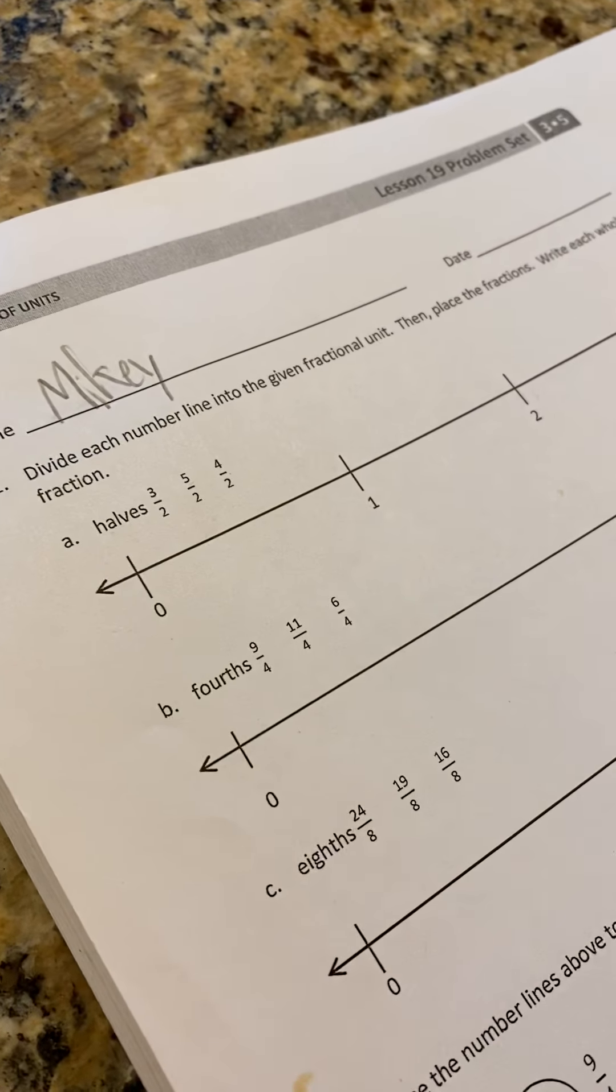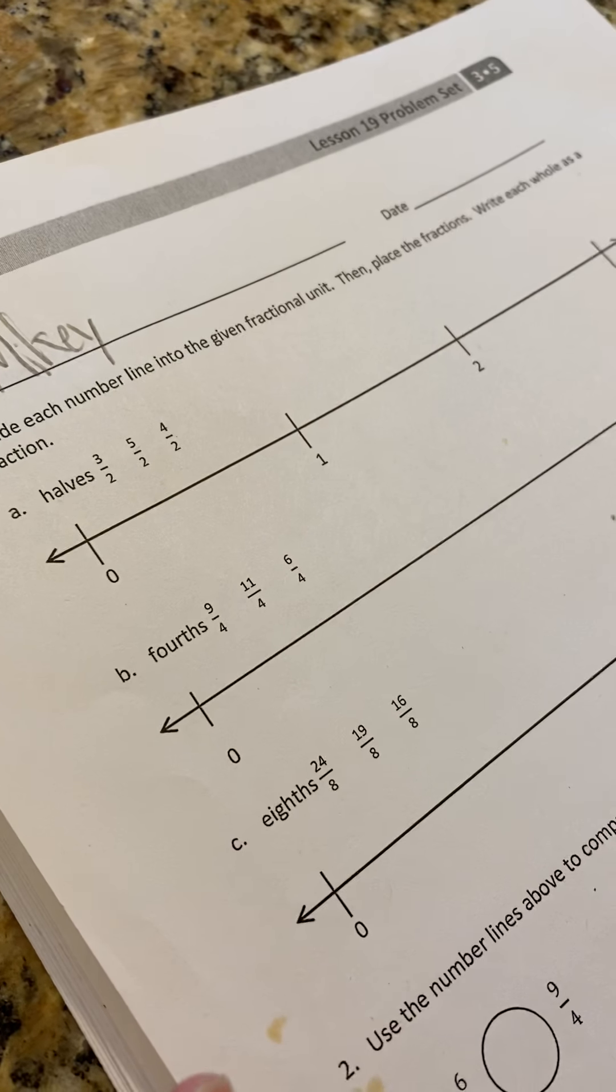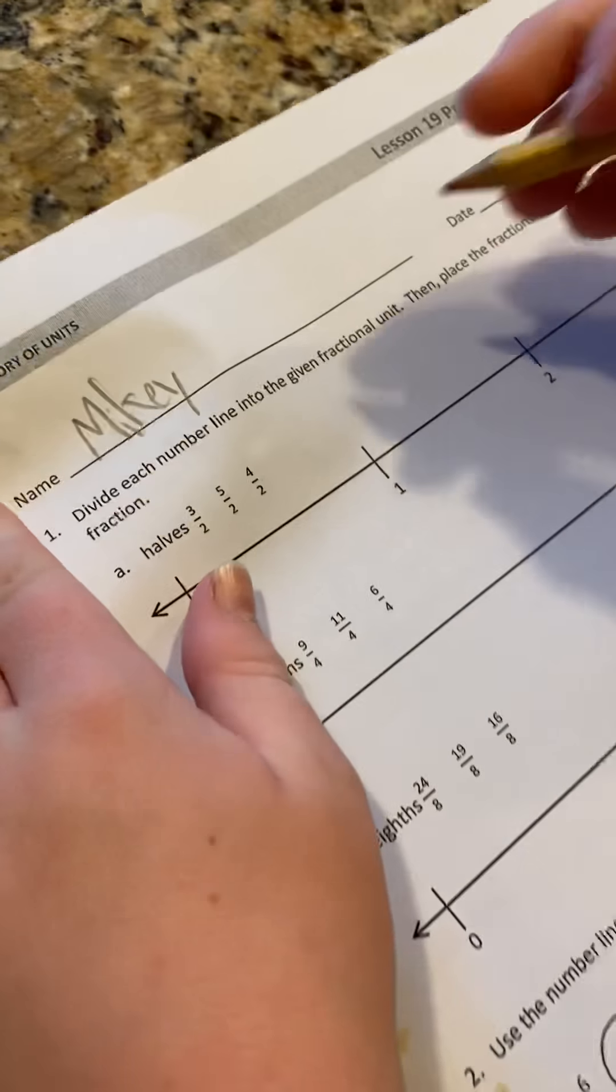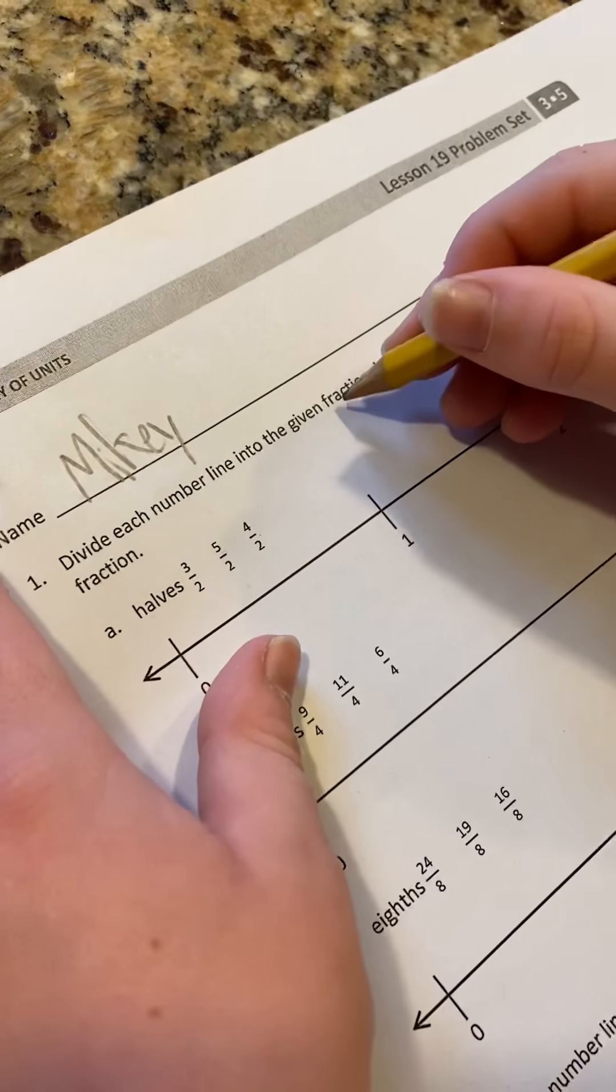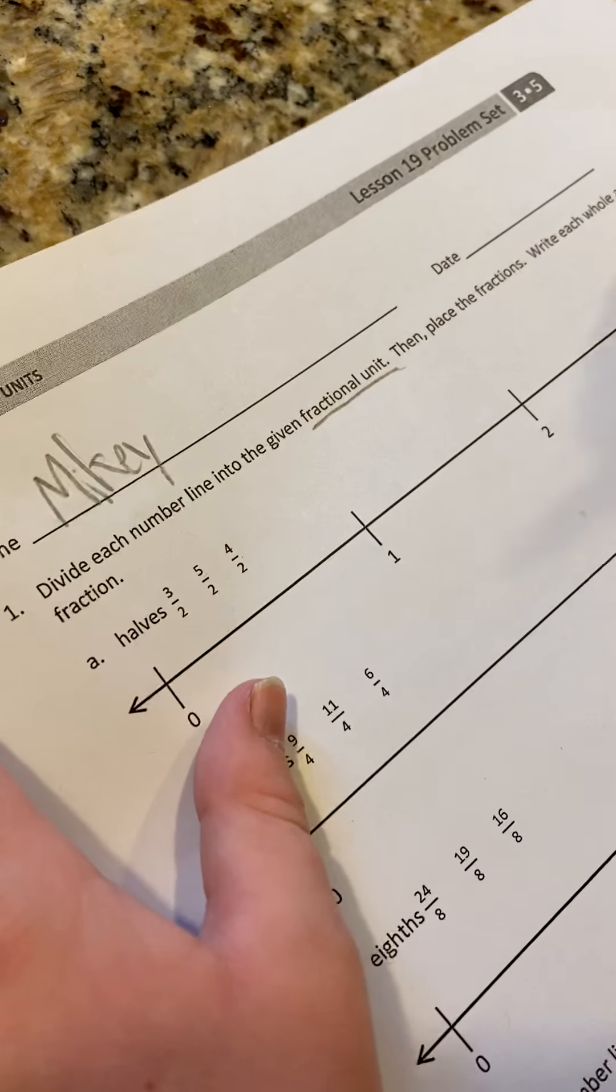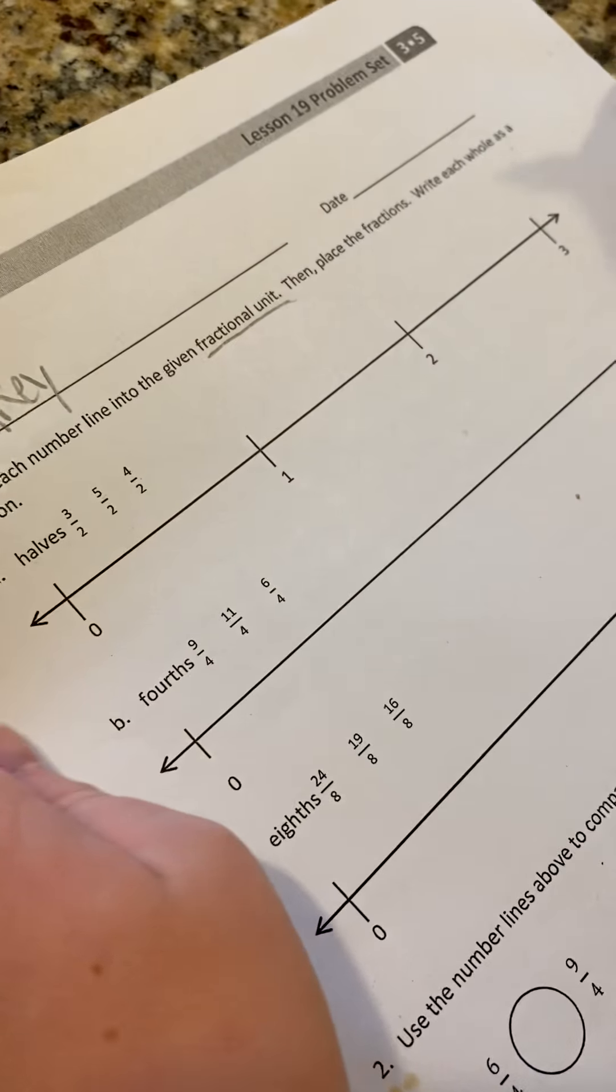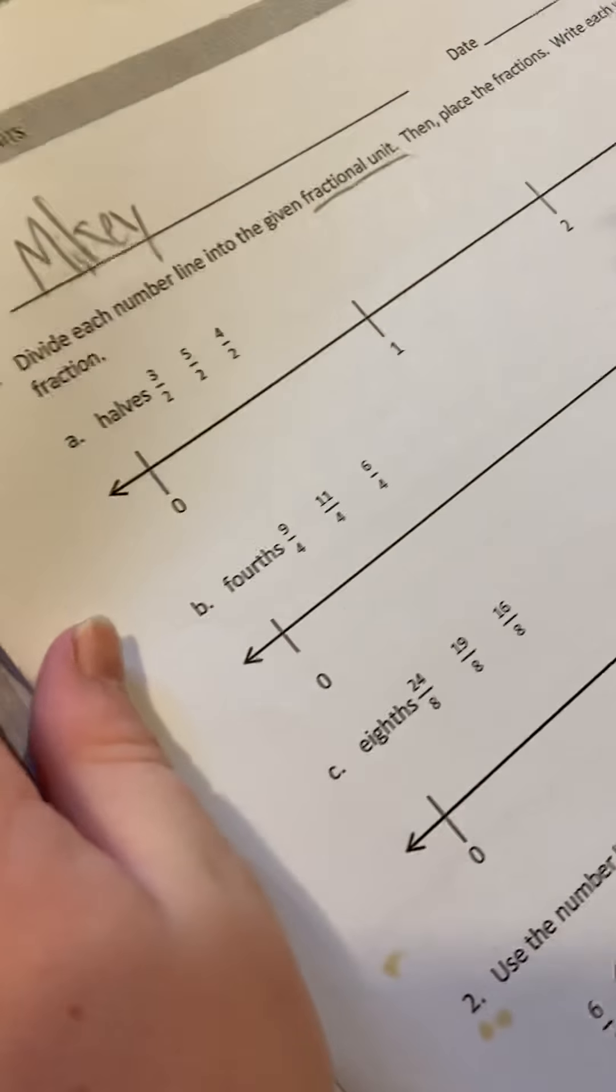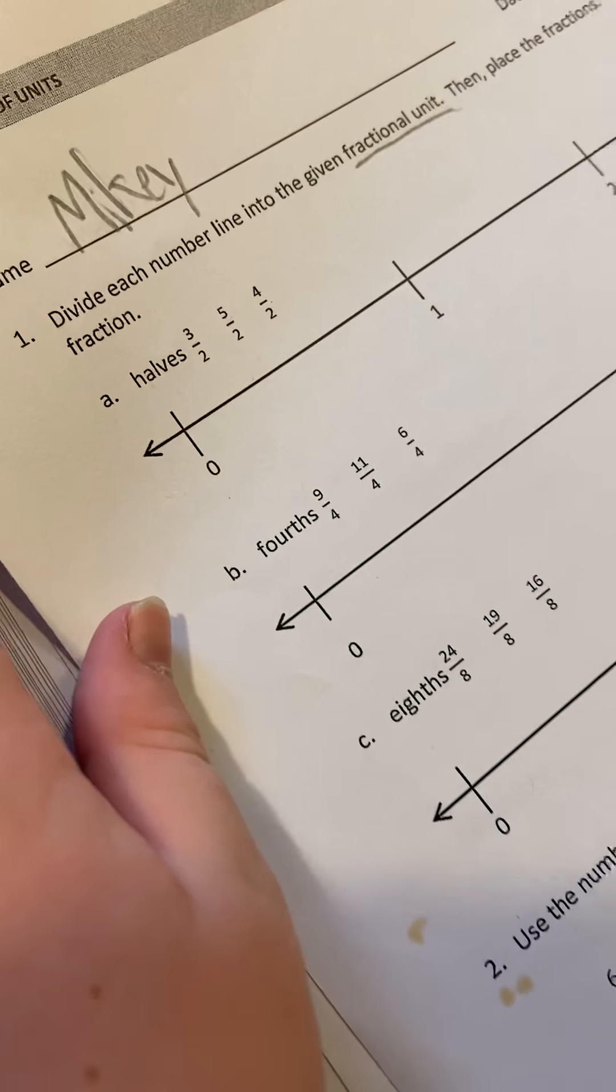All right, so it says divide each number line into the given fractional unit, underline that. Underline fractional unit, so we know what we're doing. That tells me the denominator. The denominator is your fractional unit. Then place the fractions, write each whole number as a fraction.